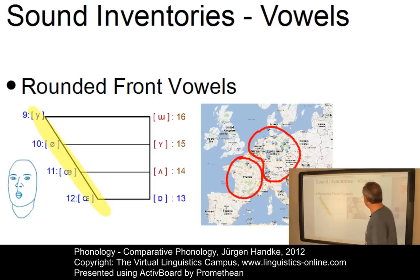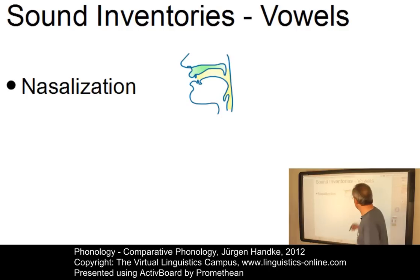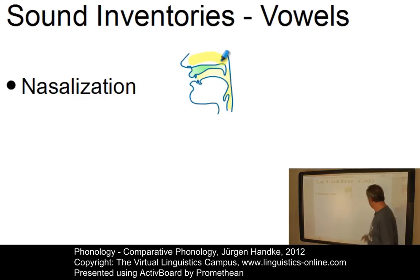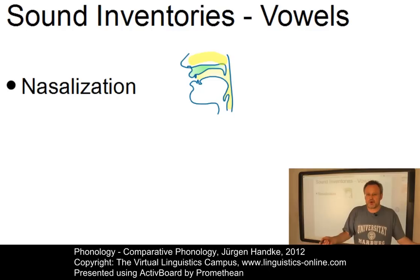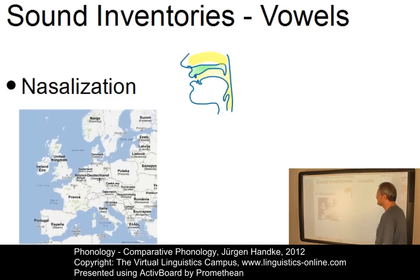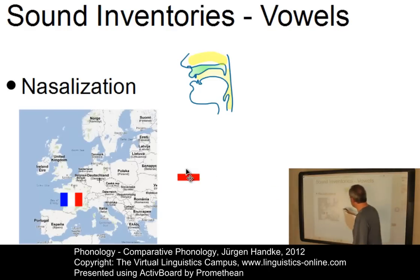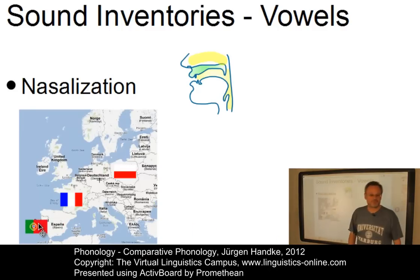Another systematic effect of this kind is referred to as nasalization — that is, does a language use nasalized vowels where the nose is used as a second resonance chamber? French, as you know, uses nasalization as in 'on'. And of the Indo-European languages, apart from French, Polish is a language which uses nasalized vowels, and Portuguese. But that's it.